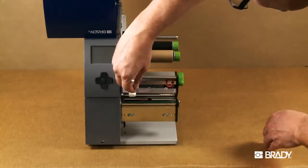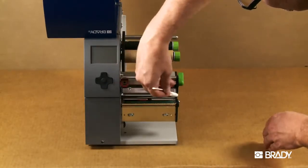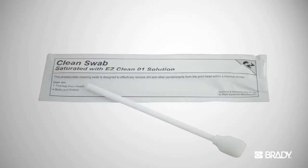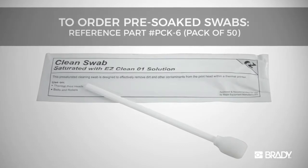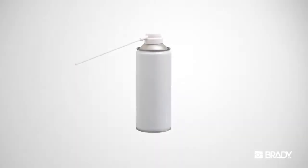To clean the printhead, use either a clean swab with 90% isopropyl alcohol or a pre-soaked foam swab. These swabs can be purchased from Brady. It may be necessary to also use canned air to remove any remaining debris from the printhead once cleaning is completed.